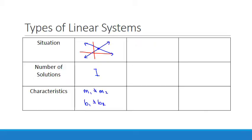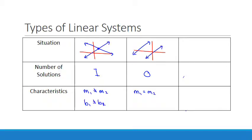Another way that two lines can interact with each other is they can be parallel. Now if they're parallel, the lines will never intersect, and that means there's going to be zero solutions. The slopes of parallel lines are equal — the slope of the first line will be equal to the slope of the second line. What about their y-intercepts? You can see that the y-intercepts are going to be different in this case.